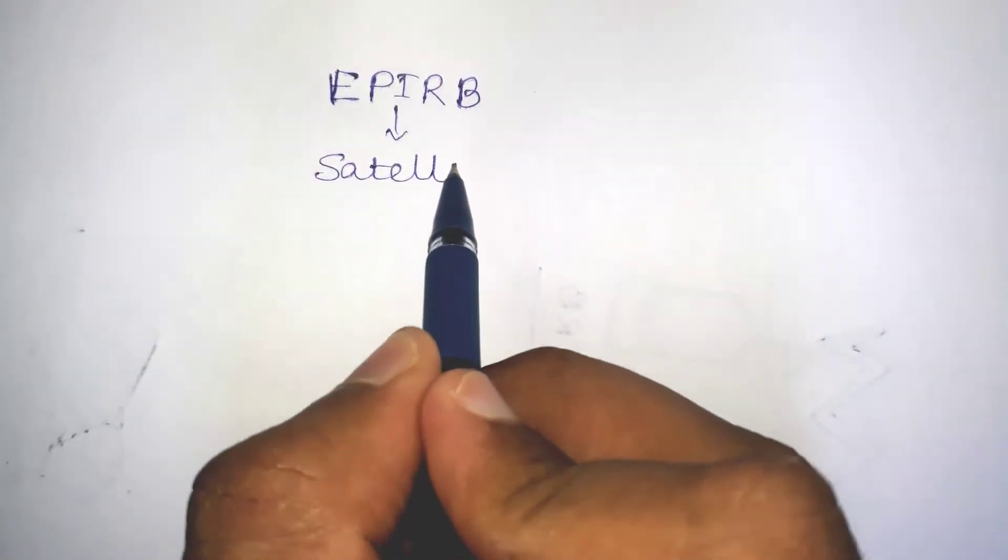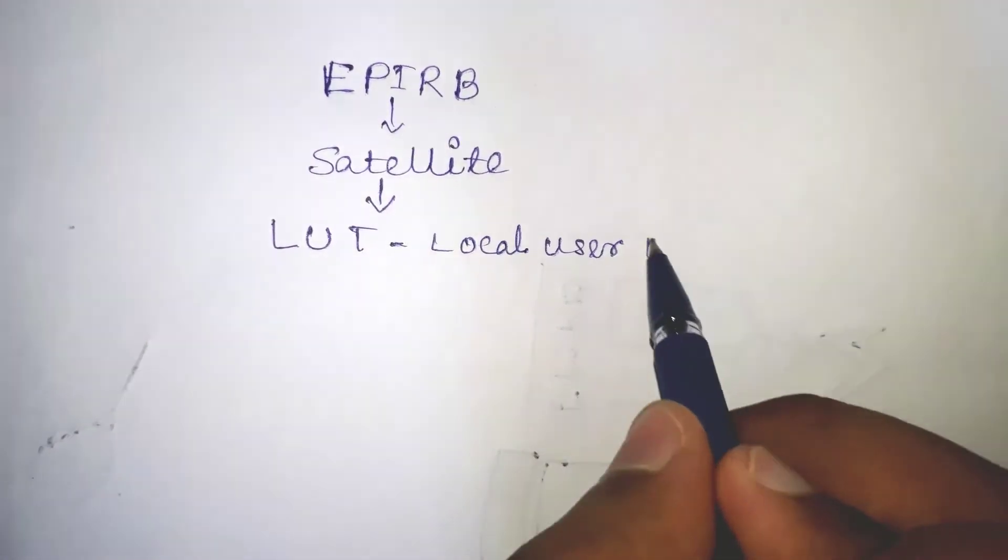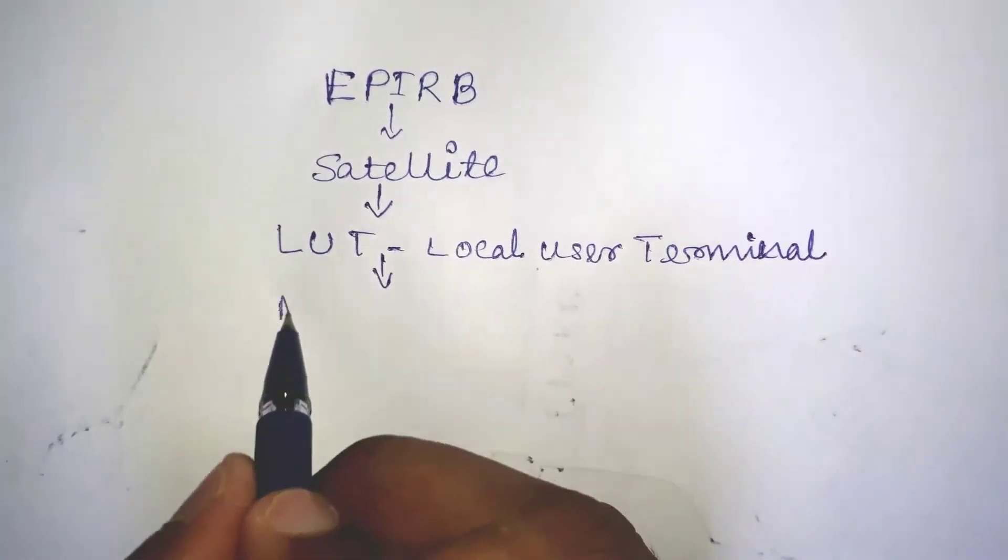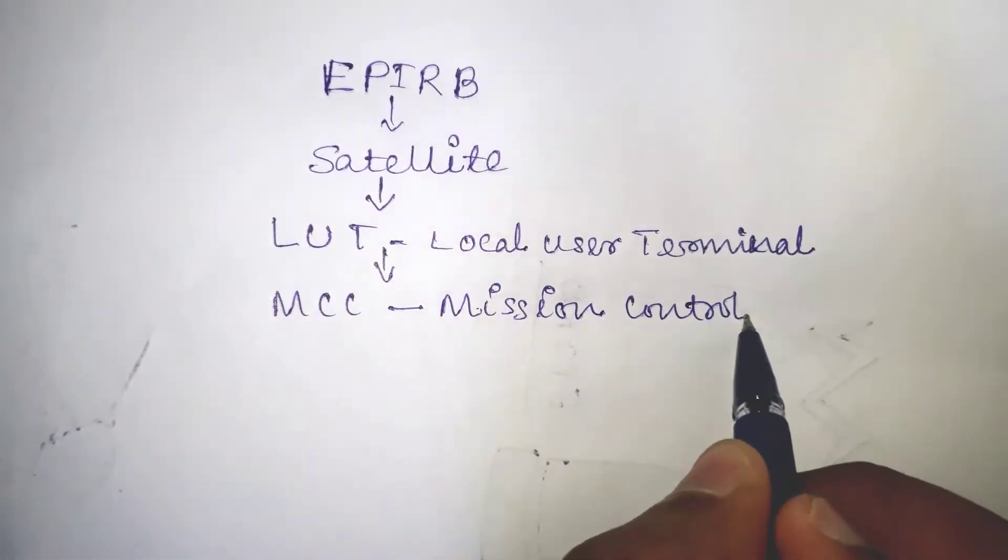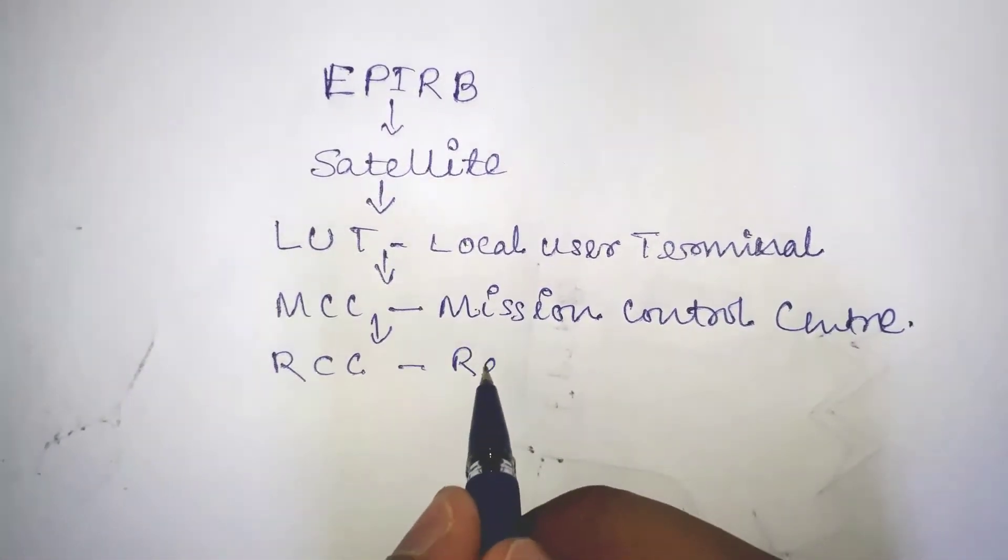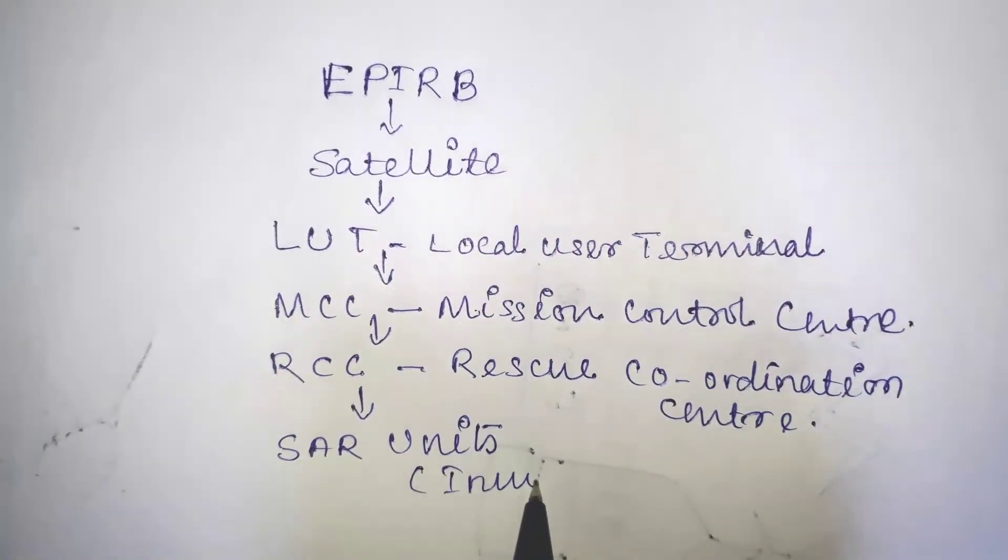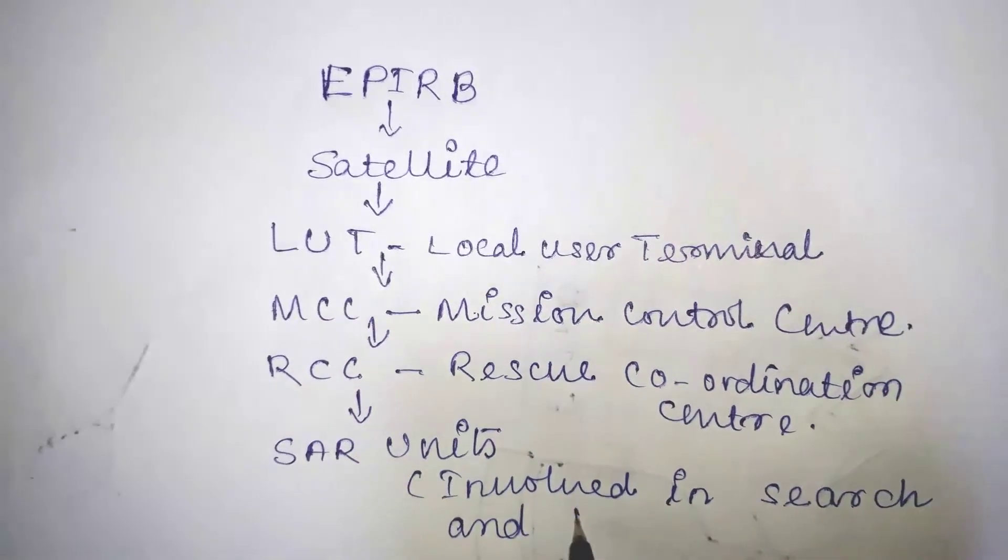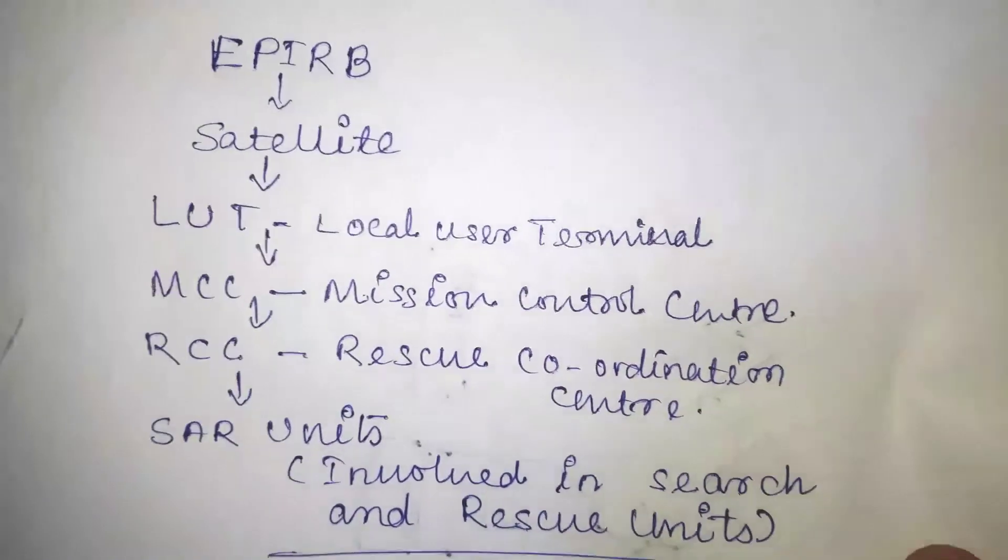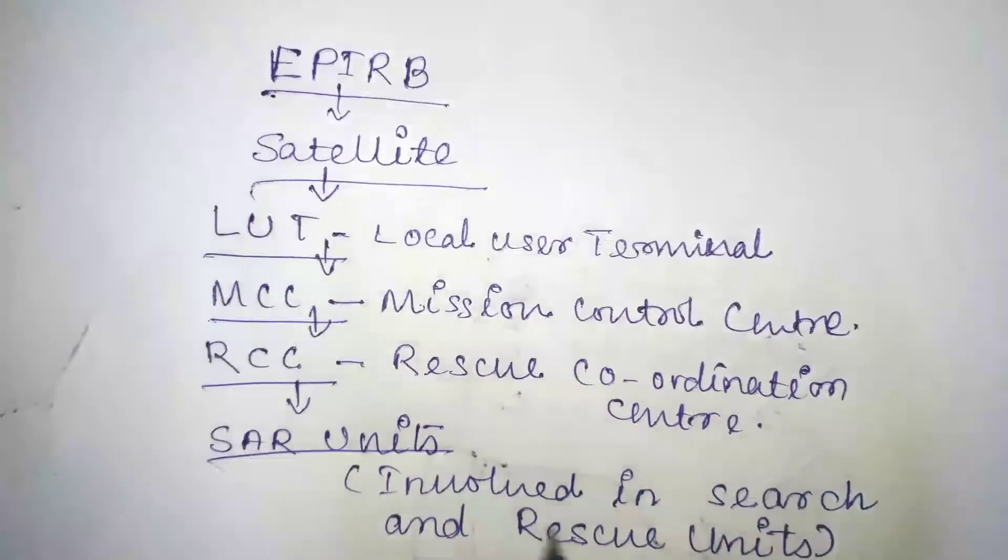As you can see in this video, the distress message is sent to the COSPAS satellite first. Then to the LUT, that is local user terminal. Then to the MCC, that is mission control center. Then it will send to the RCC, rescue coordination center. Then the search and rescue unit will rescue the vessel which is in distress. So this is how EPIRB works.